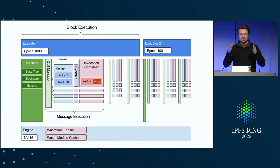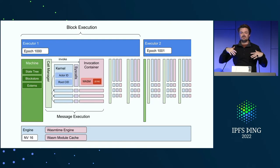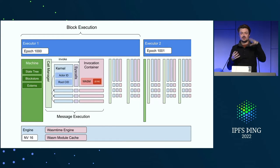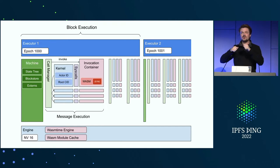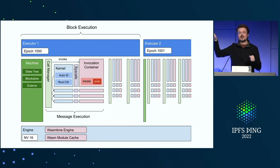For each message, we have a message execution section — we start processing a message. The executor creates a call manager. The call manager manages the call stack: a message comes in, we send it to the first actor that receives it, and that first actor can send to the next actor, and the next, and so on. That's what the call manager deals with.